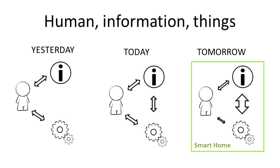Here is what I call an evolution of relations between human, information and things. By things I mean devices people use for living, like for example heating systems. The first image is yesterday,